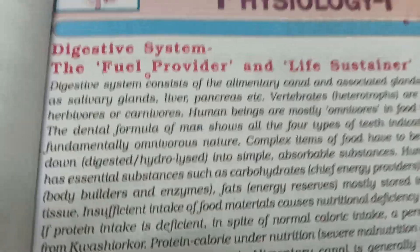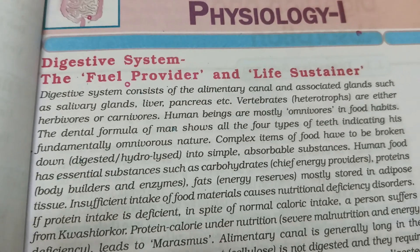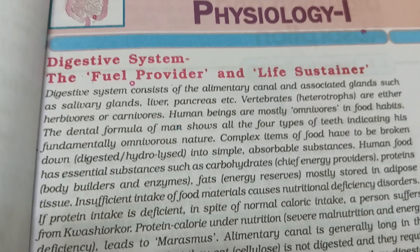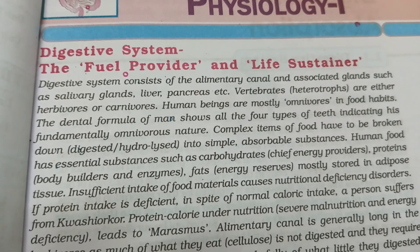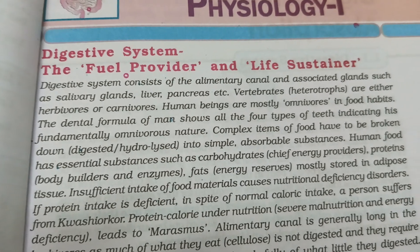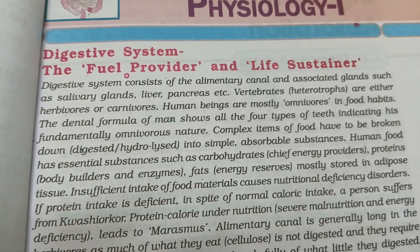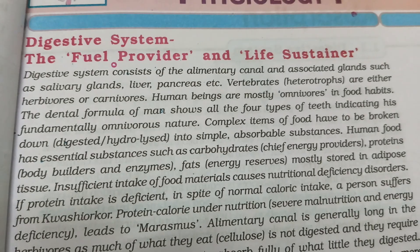The alimentary canal consists of the mouth and anus — it is a long tube. The digestive system is the main one, and this is the alimentary canal.